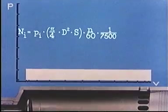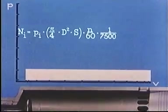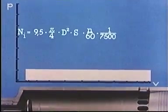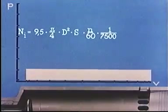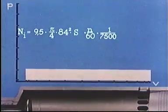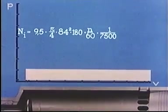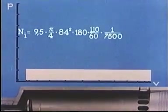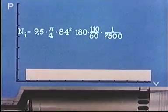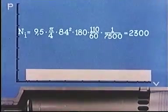To take an example, an engine with a PI of 9.5 kilograms per square centimeter, a piston diameter of 84 centimeters, a piston stroke of 180 centimeters, running at 110 revolutions per minute, will have an indicated output of 2300 horsepower per cylinder.